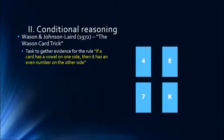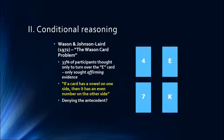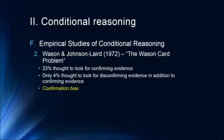We turn over the E to affirm the antecedent. About 33% of participants only turned over the E, seeing only that affirming evidence — that's called confirmation bias. But to properly test the rule, we also need to deny the consequent: flip over the card with an odd number. If it has a vowel on the other side, the rule is violated. Only 4% of participants thought to look for that disconfirming evidence, which is again confirmation bias.